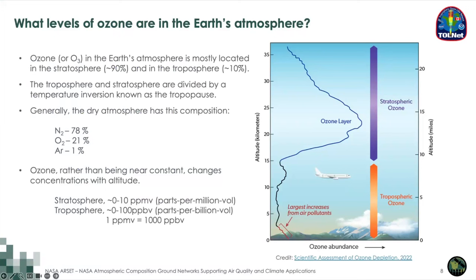We generally describe ozone from a measurement perspective as 'good up high, bad nearby,' meaning we want higher levels of ozone in the stratosphere to block harmful UV rays — good up high — but bad nearby; we don't want it down where humans breathe, as it can be an impact to public health. Because of this, NASA has a continued interest in understanding both stratospheric and tropospheric ozone levels. TOLNet focuses their research in the tropospheric portion of ozone.